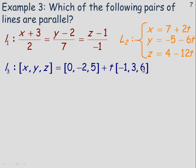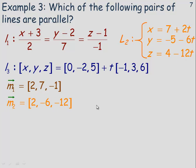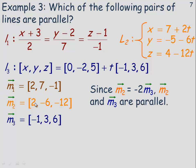In Example 3, we determine which of the given pairs of lines are parallel, with one in symmetric form, one in parametric, and one in vector form. To check for parallelism, compare direction vectors. Line 1 has direction vector (2, 7, negative 1). Line 2 has direction vector (2, negative 6, negative 12). Line 3 has direction vector (negative 1, 3, 6). Notice that m2 equals negative 2 times m3: negative 2 times negative 1 is 2, negative 2 times 3 is negative 6, and negative 2 times 6 is negative 12. So lines 2 and 3 are parallel. That's the end of the lesson.